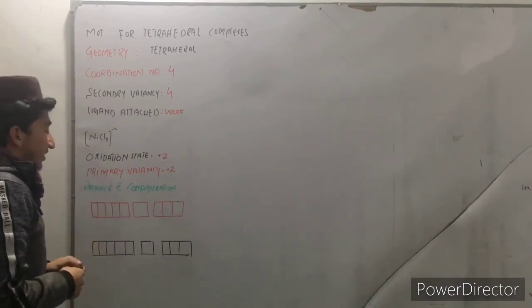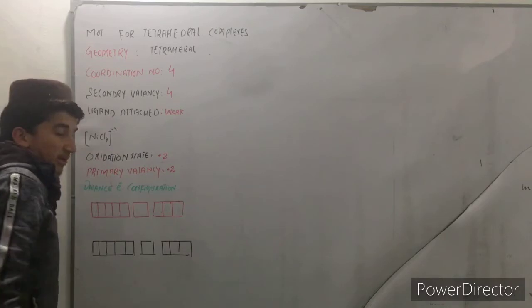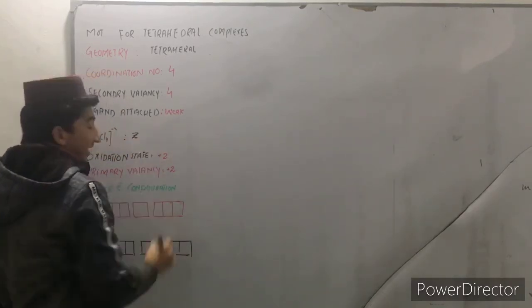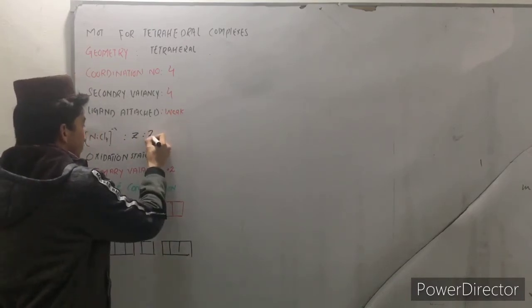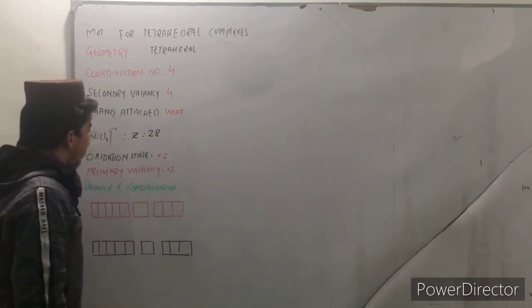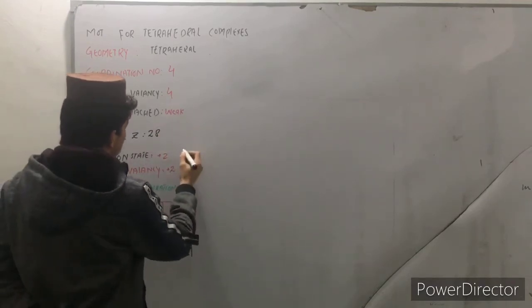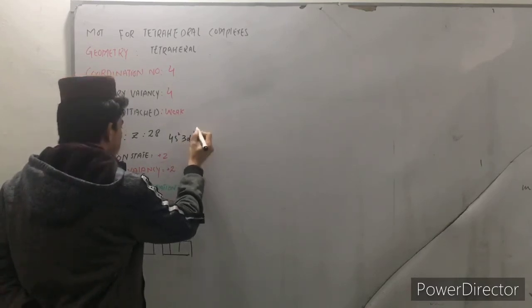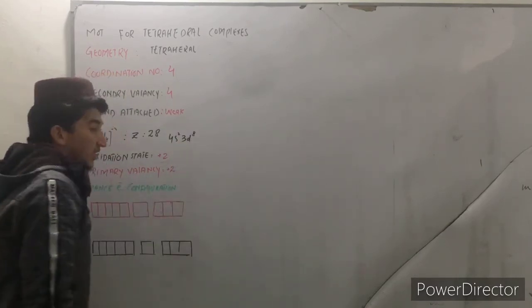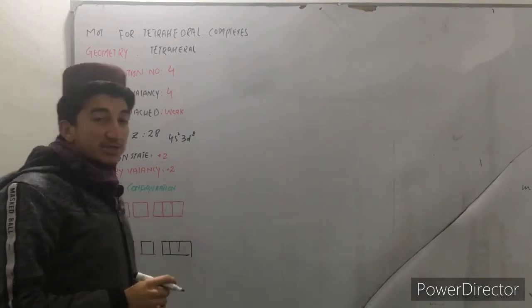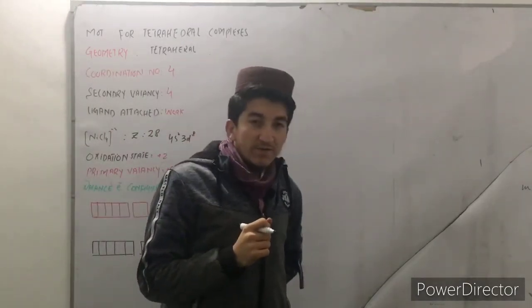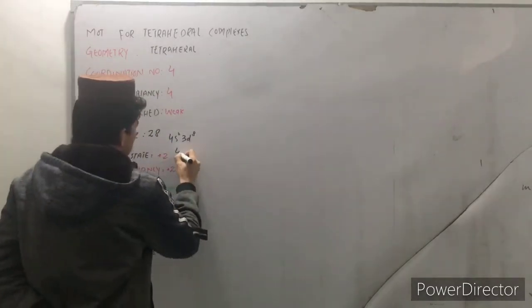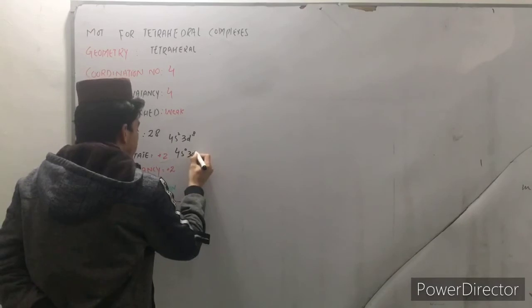The valence electronic configuration of this central metal, the atomic number which is represented by z over here is 28 and the valence electronic configuration for this case is 4s2 3d8. But as you can see in this case the nickel is in plus two oxidation state, so the two electrons will be removed from this s sub shell. So the new configuration will be 4s0 3d8.